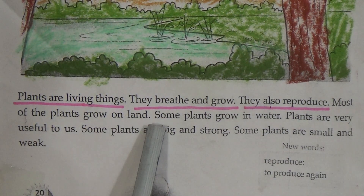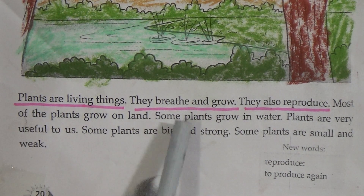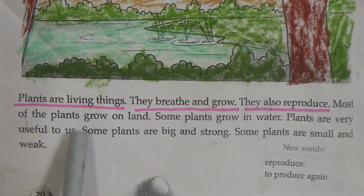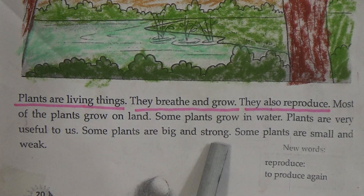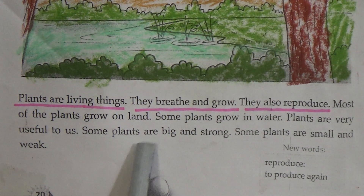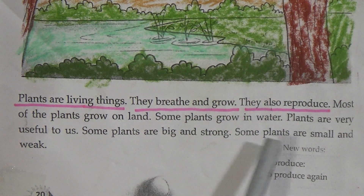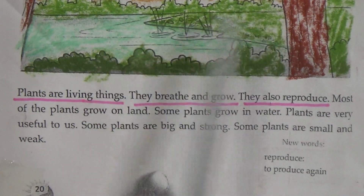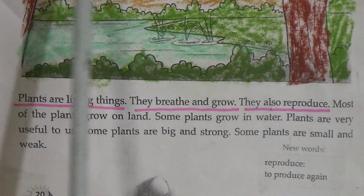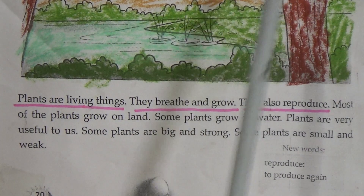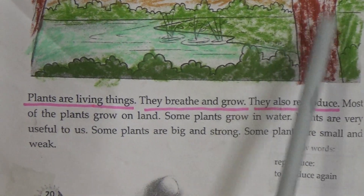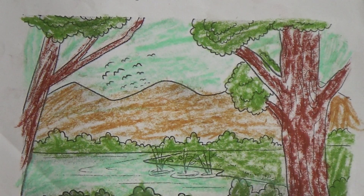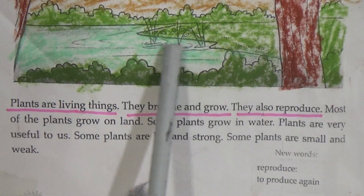Plants are living things; they breathe and grow. They also reproduce. Most of the plants grow on land; some plants grow in water. Plants are very useful to us. Some plants are big and strong, and some plants are small and weak. See this figure properly — here is a picture of plants showing big and strong plants, and here is a figure of small and weak plants.